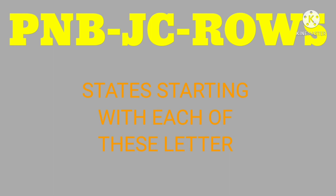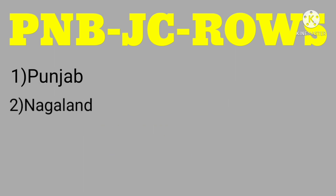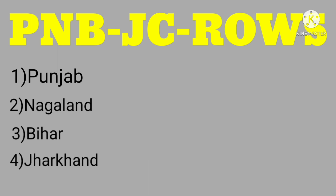Next is PNBJCRWS — this means there is a single state starting with each of these letters. The states are Punjab, Nagaland, Bihar, Jharkhand, Chhattisgarh, Rajasthan, Odisha, and West Bengal, Sikkim.